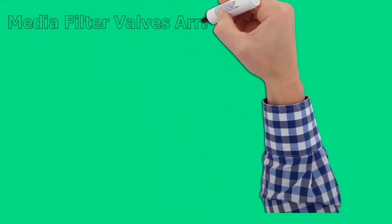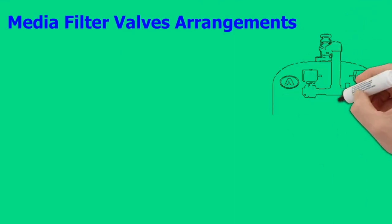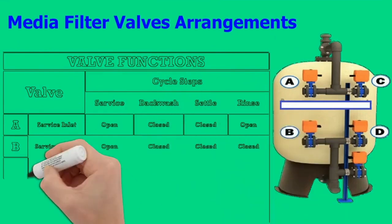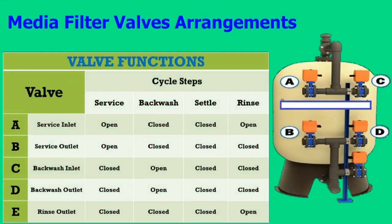Multimedia Filter Valve Arrangements. Valve A is the Service Inlet, also called the Raw Water Inlet Valve. Valve B is the Service Outlet Valve — filtered water is obtained from this valve. Valve C is the Backwash Water Inlet Valve, which only opens during backwash. Valve D is the Backwash Outlet Valve, which is open during drain and backwash time. Valve E is the Drain Valve, which is open during drain time and rinse time.